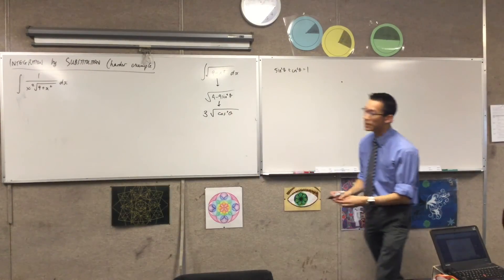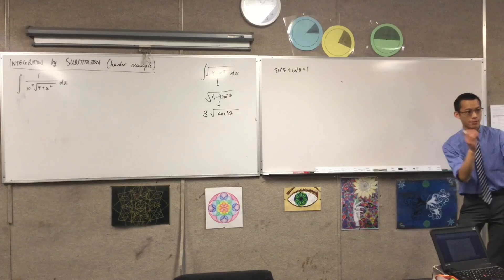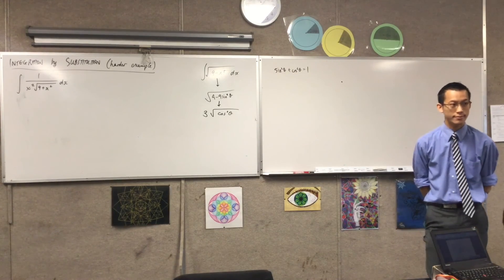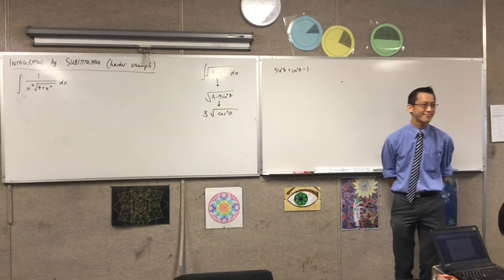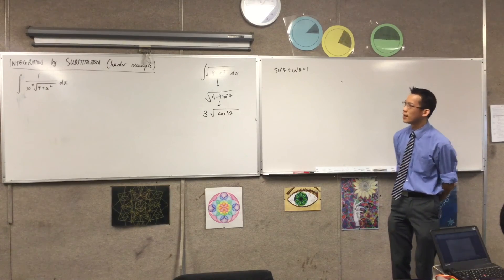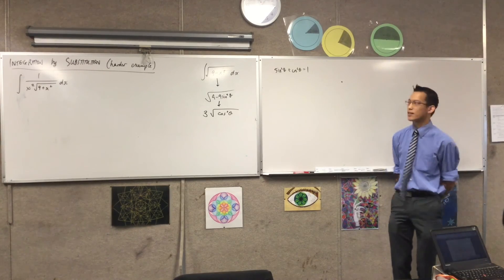Now we have something different underneath the square root here. So why might we just let x be cosθ — let x equal cos of something, so you don't have to change the variable?